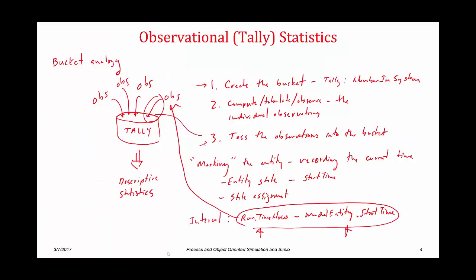Just to summarize: we have this analogy of having a bucket, and we're throwing observations into that bucket, and then Simio is computing the descriptive statistics based on the population of observations in the bucket. That three-step process: create the bucket — create the tally statistic — then compute the observation values, which is what will be different from statistic to statistic. When we want to compute a different tally statistic, the mechanism of computing the observation will be different. And then finally we toss the observations into the bucket.